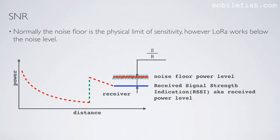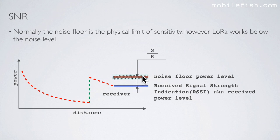Normally the noise floor is the physical limit of sensitivity; however, LoRa works below the noise level. In this picture, this is the noise floor power level, and this is the received signal strength indication, also known as the received power level. As you can see, the received power level is below the noise floor power level.